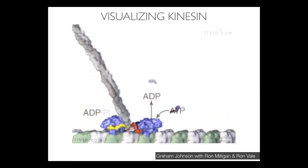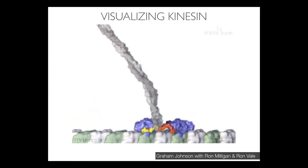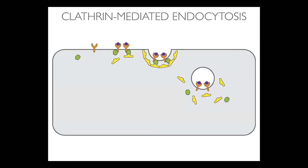I learned how to do animation in grad school and as a postdoc. I'll show you a few examples of these animations. One process I animated quite a long time ago — almost 10 years ago — is clathrin-mediated endocytosis. This figure shows what endocytosis is: the gray shape is supposed to be a cell, and proteins at the surface have to be internalized. They get internalized in a membrane bubble called a vesicle. That's basically the process of endocytosis, and now I'll go ahead and show you the animation.